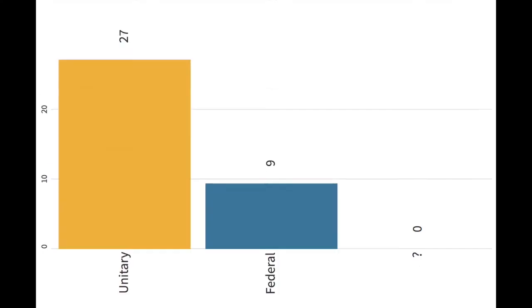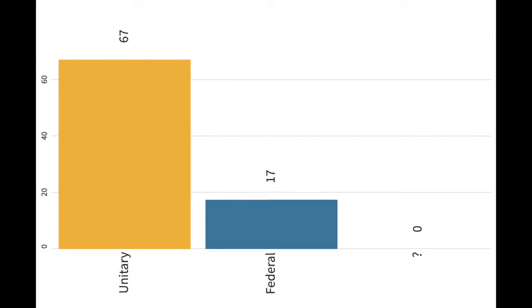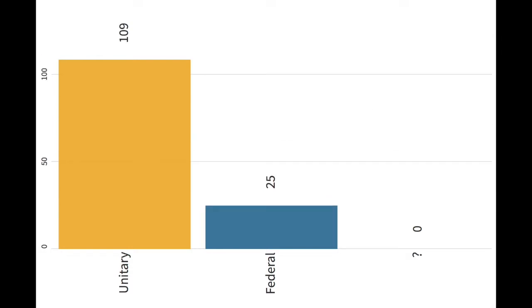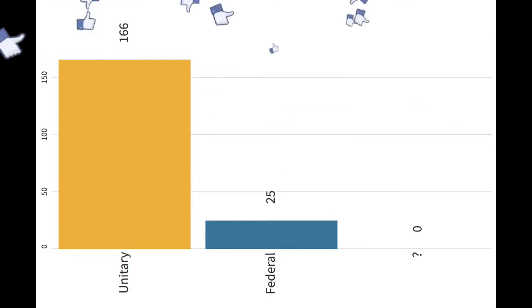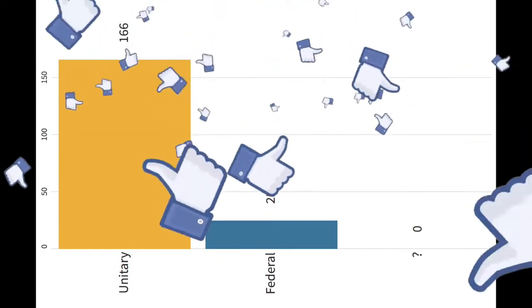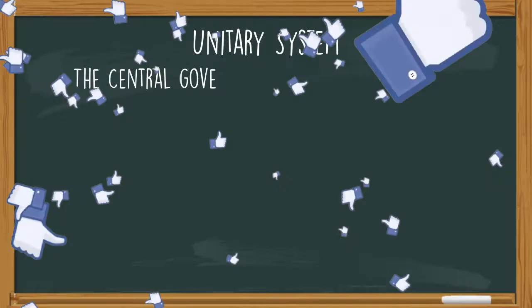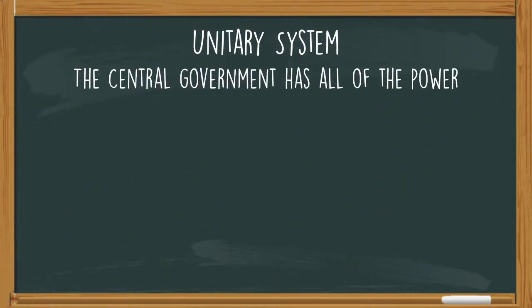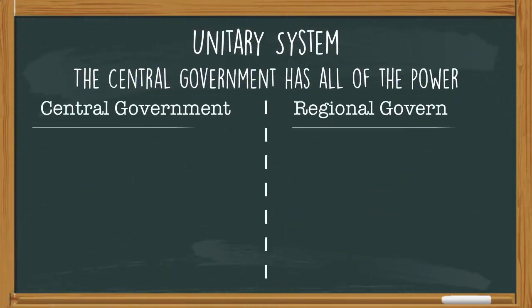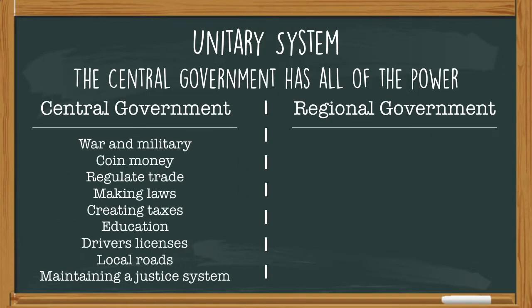So now we're going to look at the most popular system, which is called a unitary system. More countries have this system than any other. And in a unitary system, the central government is going to have all of the power. If we do a side-by-side, the central government is going to have the ability to do everything in the nation.